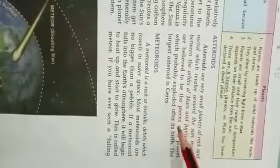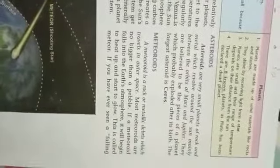They are believed to be pieces of a planet which probably exploded after its birth. They are the pieces of the planet. The largest asteroid is Ceres. Meteoroids: a meteoroid is a rock or metallic debris which travels in outer space.